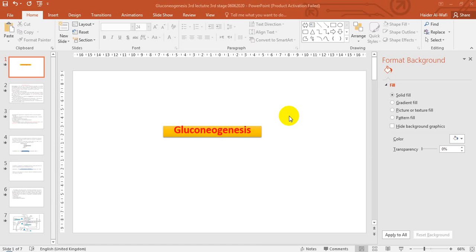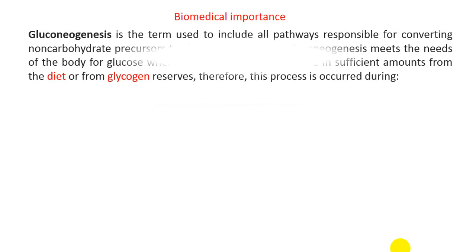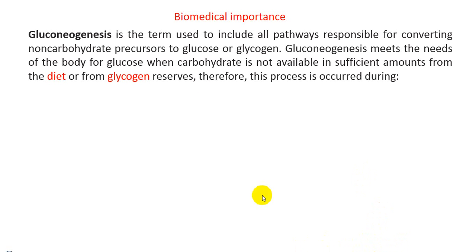Today's lecture is talking about a very important process in the medicine field called gluconeogenesis. Let us start with the biomedical importance for this process, which is very important inside the human body. Gluconeogenesis refers to all the pathways responsible for converting non-carbohydrate precursors to glucose or glycogen.